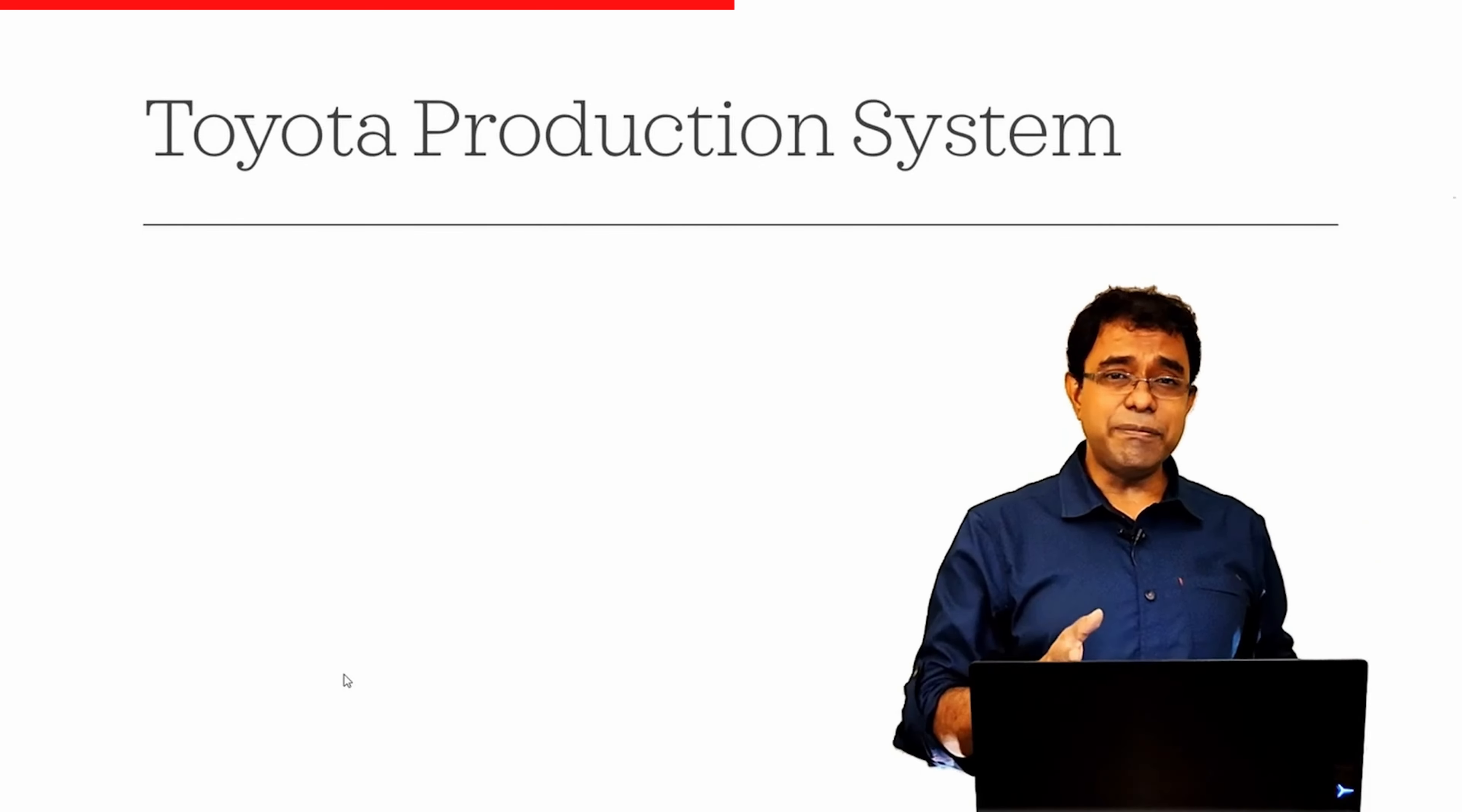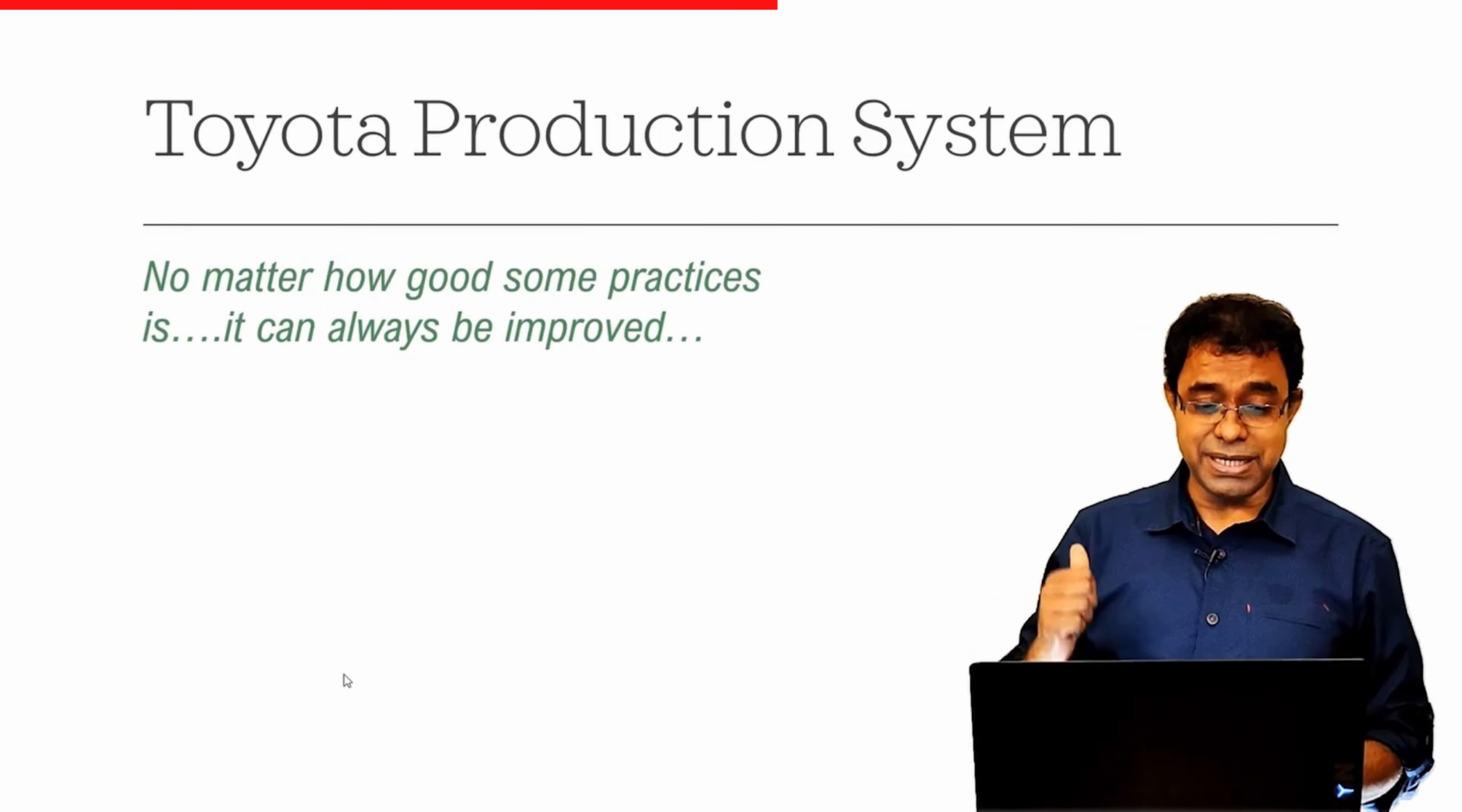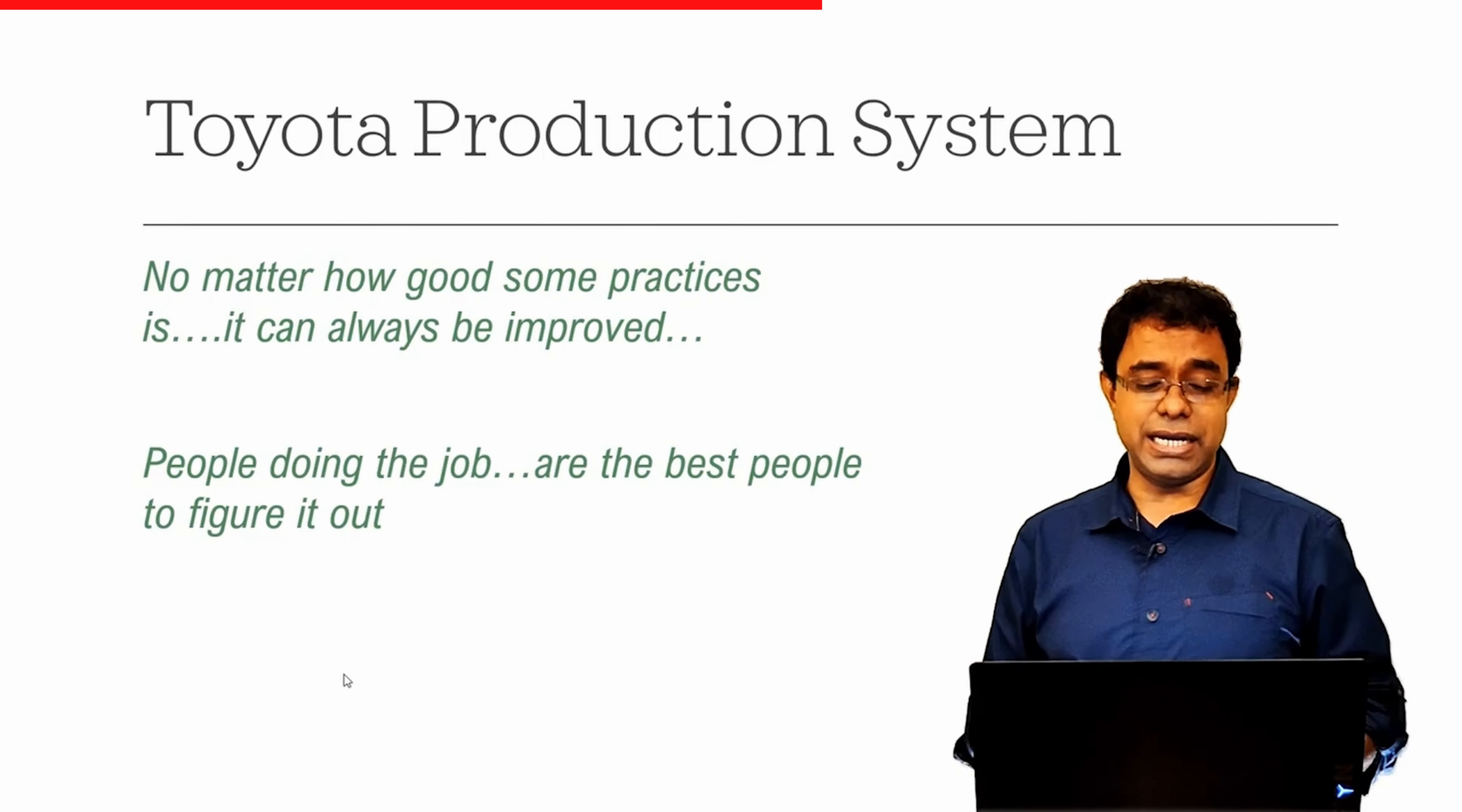Let's talk about something which actually impacts discussions all the time whenever we talk about lean or agile software development and that subject is Toyota production system. Most of the things in lean and agile world is derived from Toyota production system. The crux of Toyota production system says that no matter how good some practices is, it can always be improved and people doing the job are the best people to figure it out. They are of the opinion that you are doing something which is considered as a best practice today, but this can also be improved and the people who are actually doing things are the best people to improve those practices.